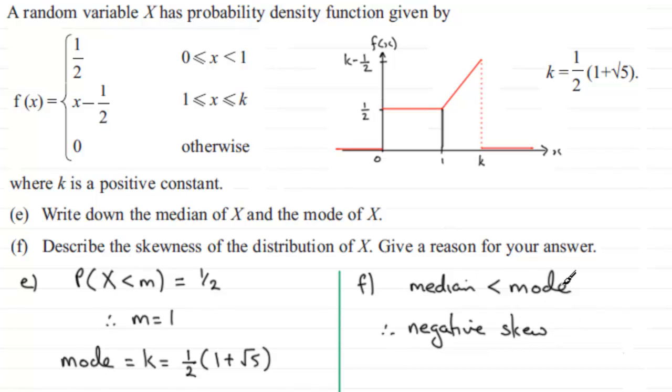If it was the other way around, the mode was less than the median, then we would have positive skew. But for this example, we have negative skew. So I hope that's given you some idea then of how we would go about these last two parts.